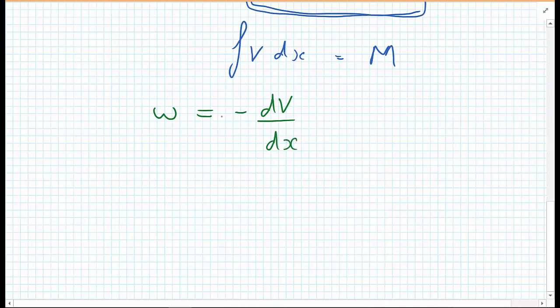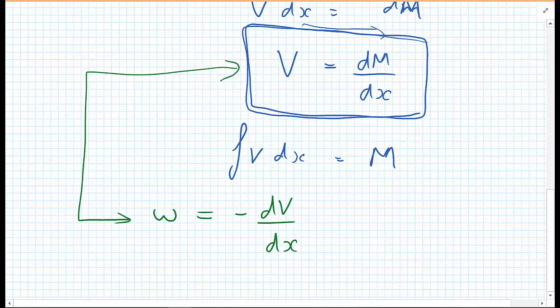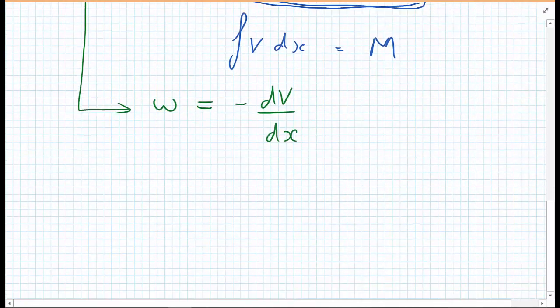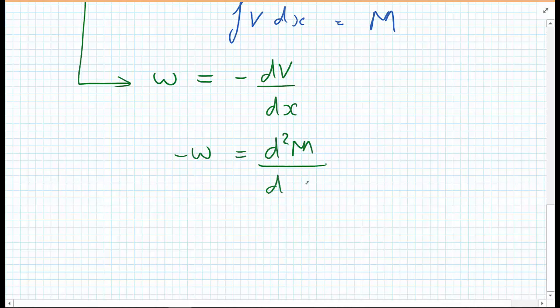Using this statement and this statement together, we can then write that minus W equals d²M by dx squared, so we have a consistent line through from the loading to the shear force and to the bending moment. This is a fundamental formula.